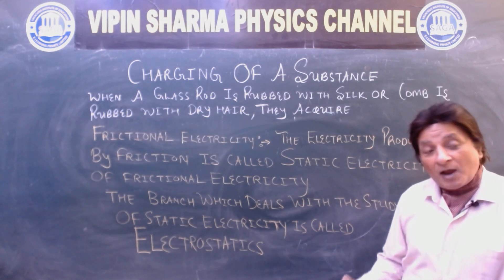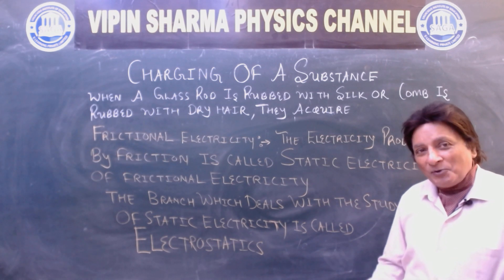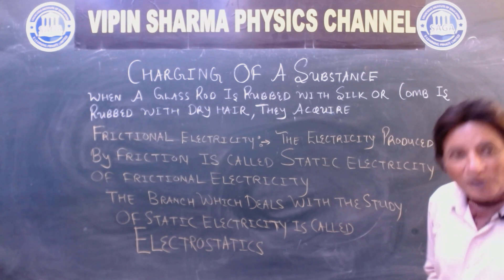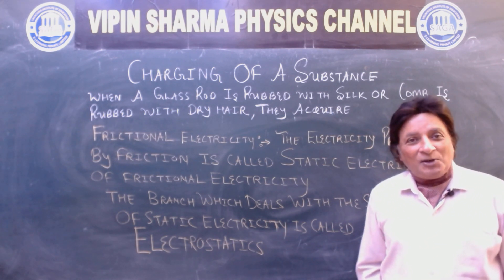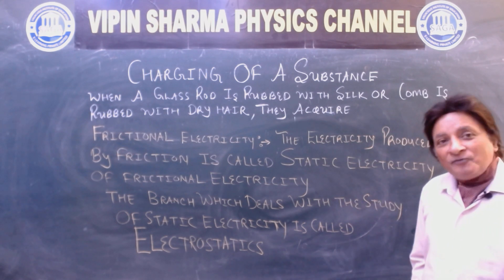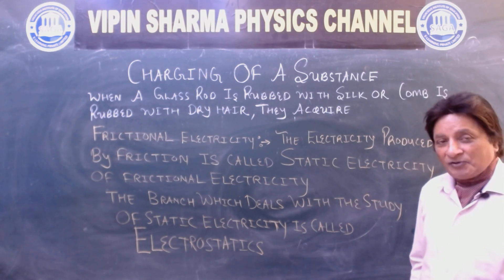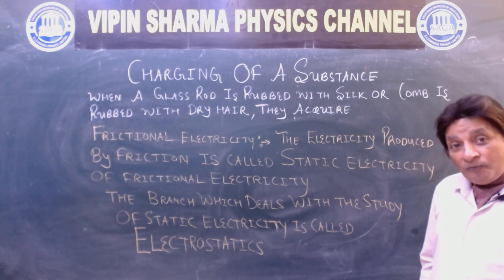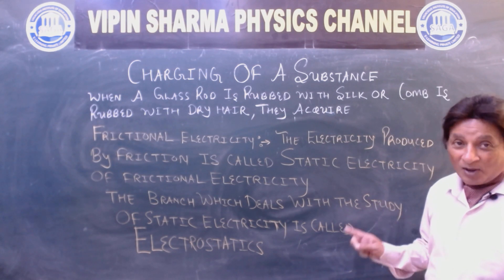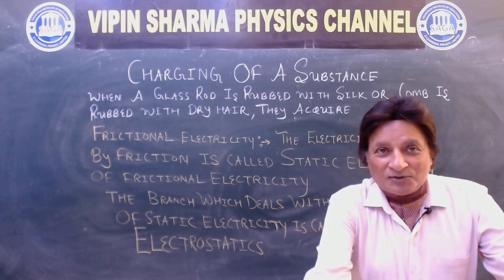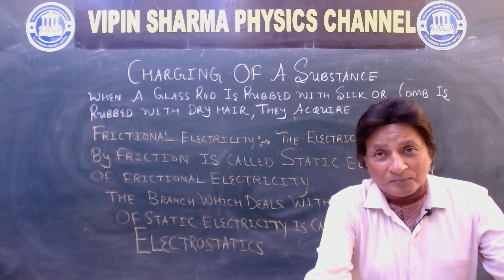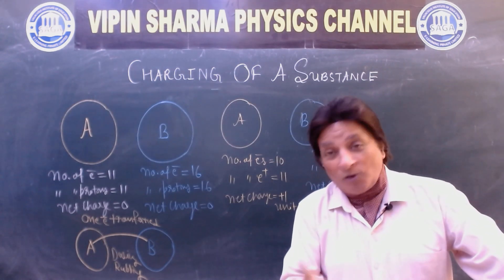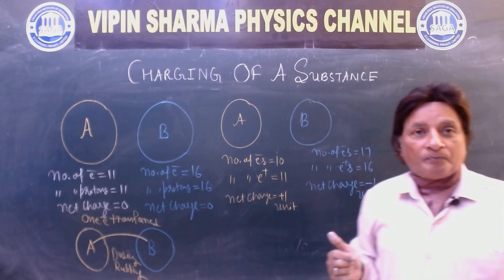This is a complete chapter in plus two physics, electrostatics. When you go into plus two, you have this knowledge, so your grip will be stronger on the chapter. Hope it is clear. Frictional electricity, the electricity produced by friction is called static electricity or frictional electricity. The branch which deals with the study of static electricity is called electrostatics. Dear students, now we are going to go a little further. Let me rub it.